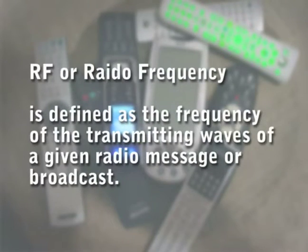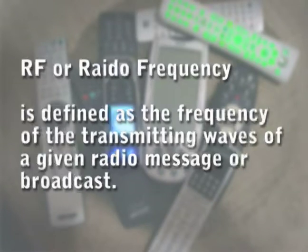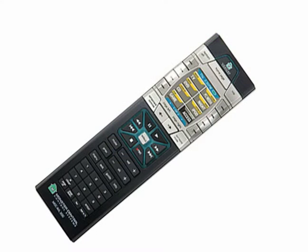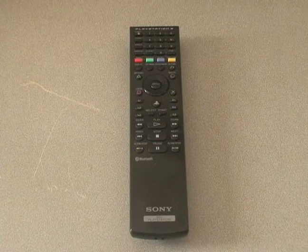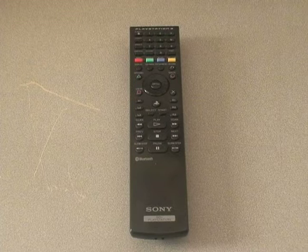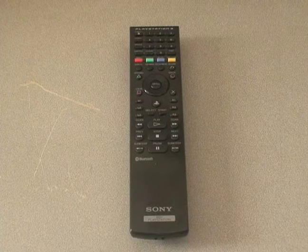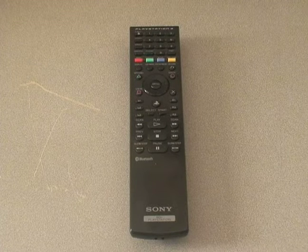RF, or radio frequency, is defined as the frequency of the transmitting wave of a given radio message or broadcast. These types of remotes can be used anywhere in the home to control a unit compatible of receiving RF signals. Bluetooth remotes, such as the one being used with the PlayStation 3, is another form of RF, yet it's a slightly different frequency.